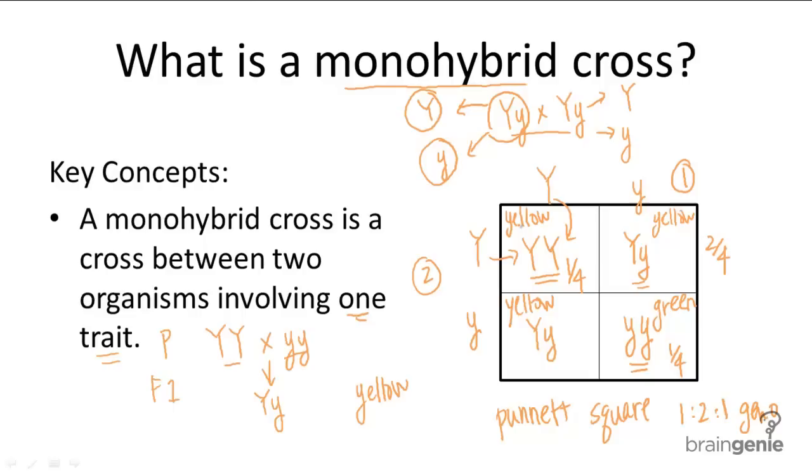So that means these three colored-in boxes show a yellow phenotype, and this one is the only one that shows a green phenotype. Again, you see a ratio, a 3 to 1 phenotype ratio of dominant to recessive traits. And again, in all monohybrid crosses that involve two heterozygous organisms, you will always have a 3 to 1 phenotype ratio.